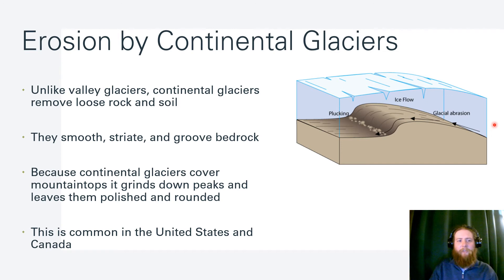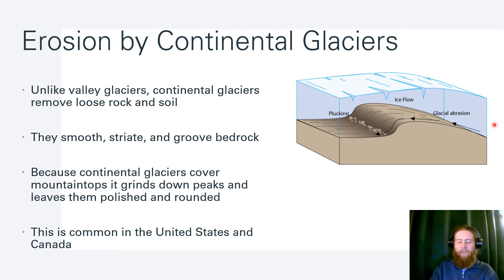Continental glaciers also cause erosion much like valley glaciers — removing loose rock and soil, and smoothing, striating, and grooving the bedrock. Because these glaciers cover the mountaintops, they grind down the peaks, leaving them polished and rounded — unlike valley glaciers that form arêtes and horns. Continental glaciers are very common in the United States and Canada, so we get a lot of these erosion features here.